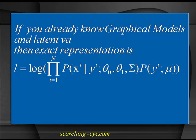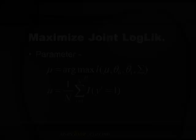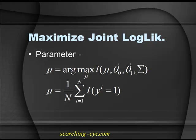If you are familiar with graphical models and latent variables, this is the exact representation. The joint log likelihood is the log of the product over all i from 1 to n of p(xi | yi), parameterized by theta-naught, theta-1, and Sigma, times p(yi) parameterized by mu. We maximize the joint log likelihood (or minimize the negative joint log likelihood) to determine the parameters of the distribution.